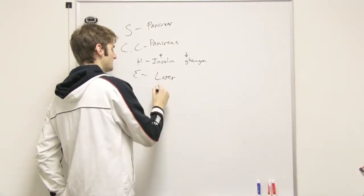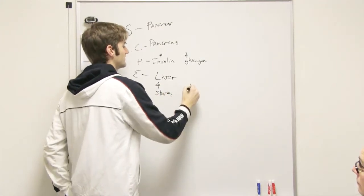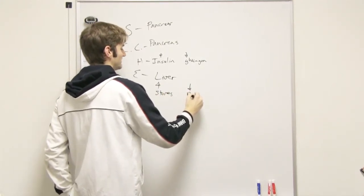When it's too high, the liver stores sugar. When it's too low, it releases that stored sugar.